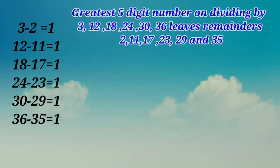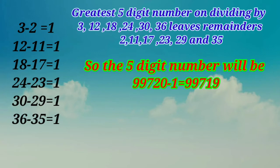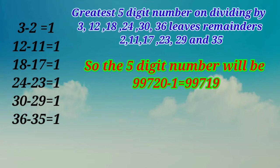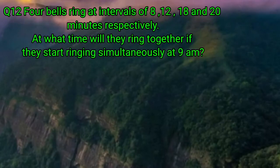So that greatest 5-digit number will be 99,720 minus 1, which is 99,719. So 99,719 is the greatest 5-digit number which on dividing by 3, 12, 18, 24, 30 and 36 leaves remainders 2, 11, 17, 23, 29 and 35. Now let's begin question number 12.